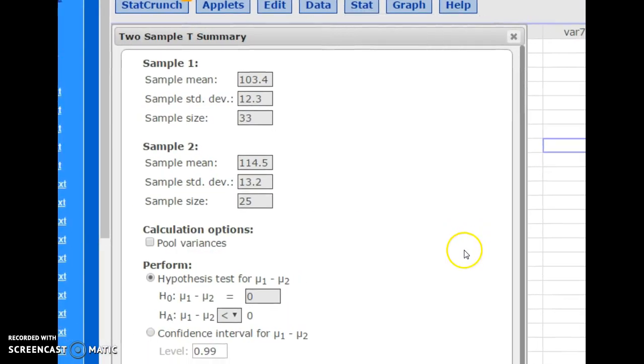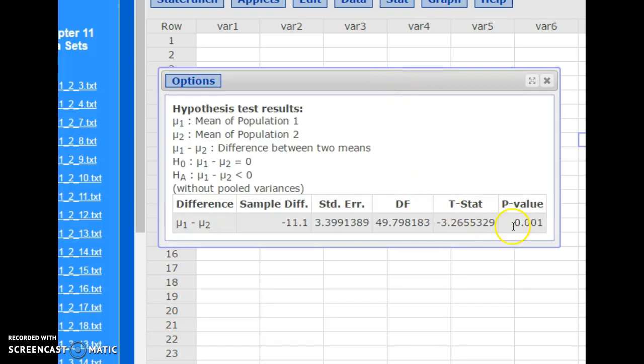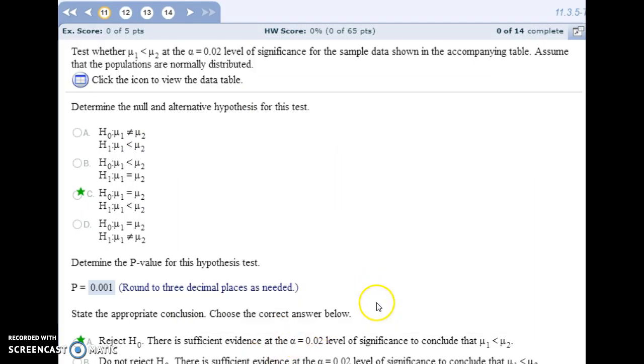Make sure you don't have pool variances clicked. We're doing a hypothesis test. We were checking for less than, and then when you hit Compute at the bottom, it'll give you your p-value. So the likelihood of samples like the ones we got are about one out of every thousand, which is pretty tiny, and that 0.001 is less than our alpha, so we are going to reject the null hypothesis.